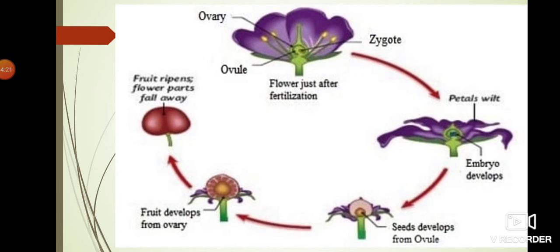Then the embryo inside the ovary starts to develop. After some days, seeds develop from the ovule. I already told you: ovules produce seeds and the ovary produces fruit. After a few more days, fruits develop from the ovary and seeds also develop inside the ovule. After some days, the fruit ripens. The flower parts fall away. The ovary part becomes fruit and the ovule part becomes the seed.